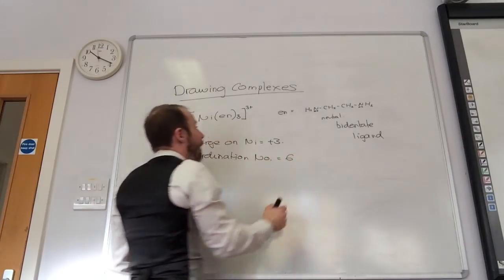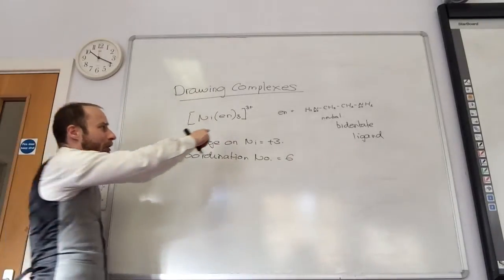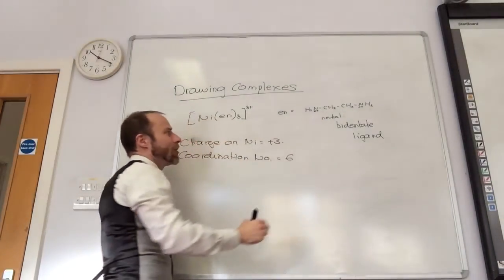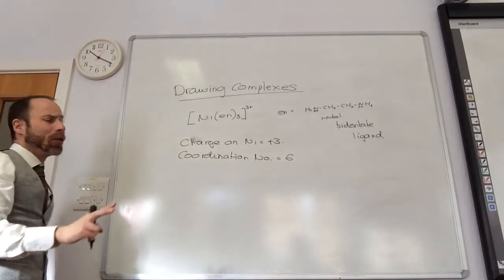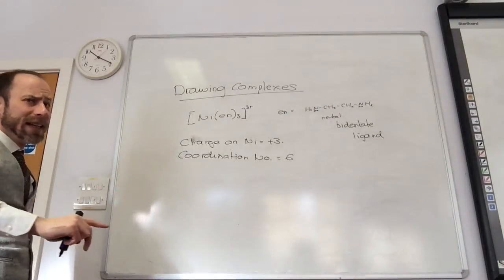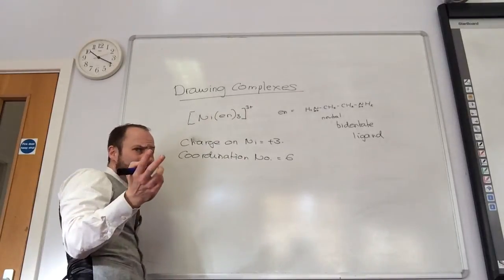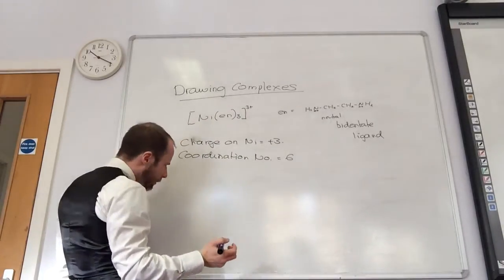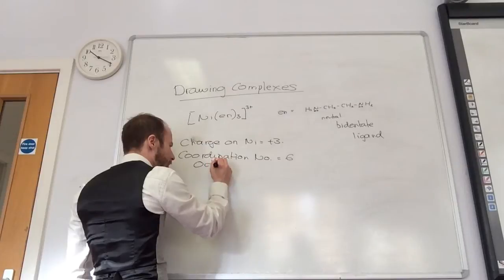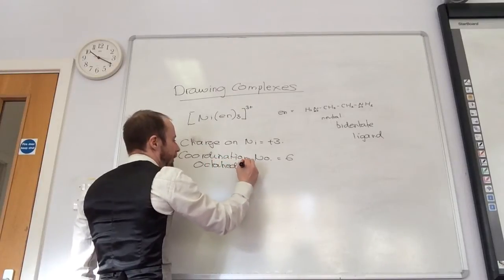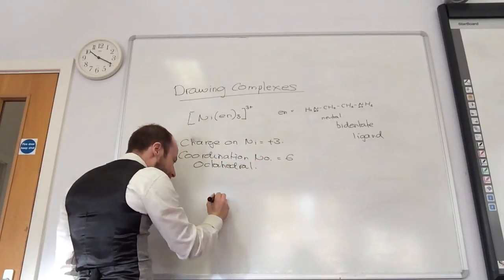Okay, so how many coordinate bonds? What's going to be my coordination number? Coordination number is going to equal six. Sorry, how do you know that? I know that because I've got three of these. Yeah. Each of them can form two bonds, so I've got six in total. Now we need to draw him. Okay, so what's going to be my shape? Octahedral. Octahedral, let's put it down. Octahedral, just so that you're happy. Okay, so nickel in the middle.